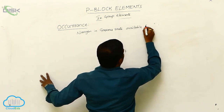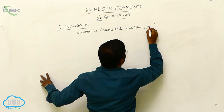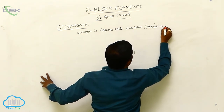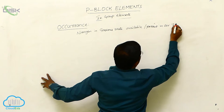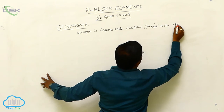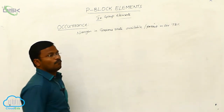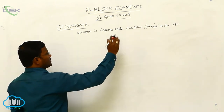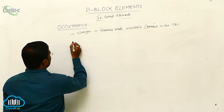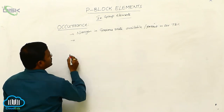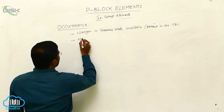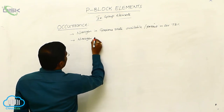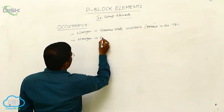Nitrogen is present in air at about 78 percent of its volume.